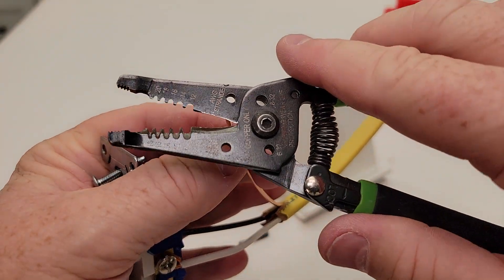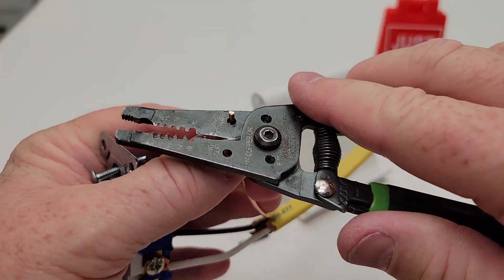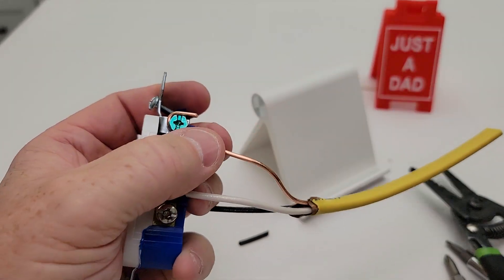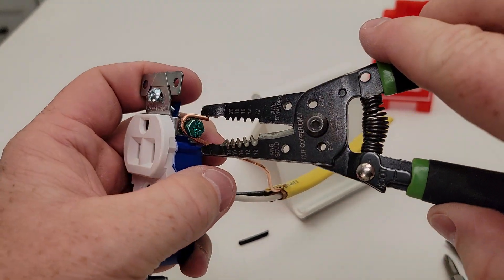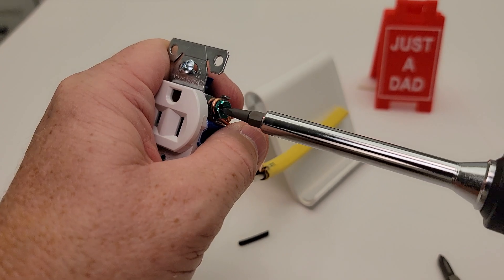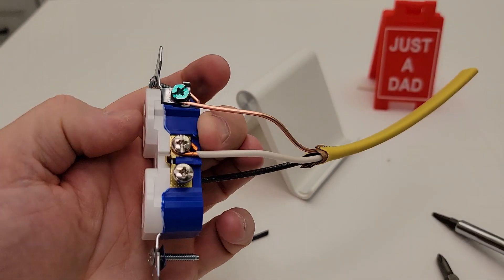Again, put your loop in, hook your ground wire up. Pull it around. It just makes for a really nice, solid connection. There you go.